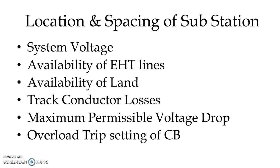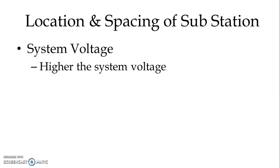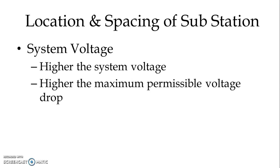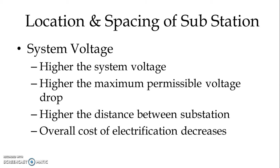Now let us discuss each factor in more detail. We start with system voltage. Higher the system voltage, then the maximum permissible voltage drop — which is a certain percentage of the system voltage — will be higher, and a higher distance between the substations can be selected, and the overall cost of electrification decreases.